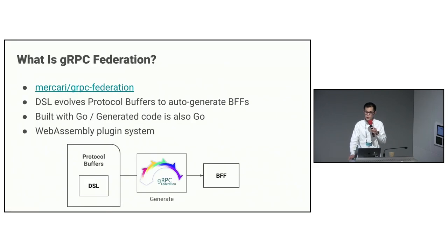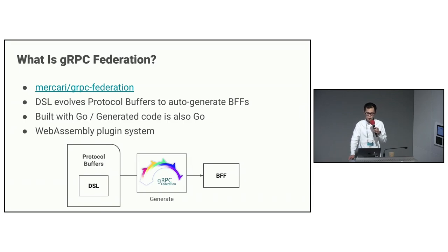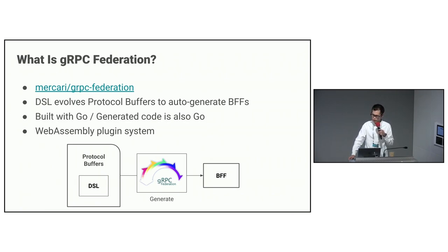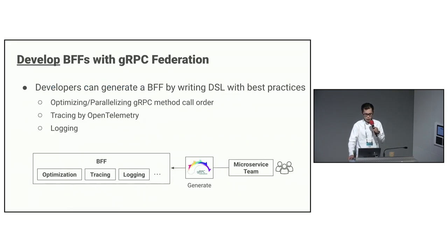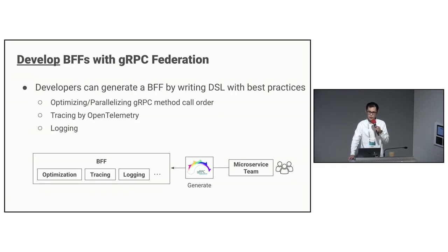So what is zRPC Federation? zRPC Federation is an open-source software to automatically generate zRPC servers by writing custom DSL in protocol buffers. It can be accessed from the following link. It is implemented in Go, and all the generated code is also in Go. It has a plugin system using WebAssembly to implement platform-specific features. With zRPC Federation, developers can create BFFs by writing only the minimal necessary logic, while zRPC Federation handles the rest.